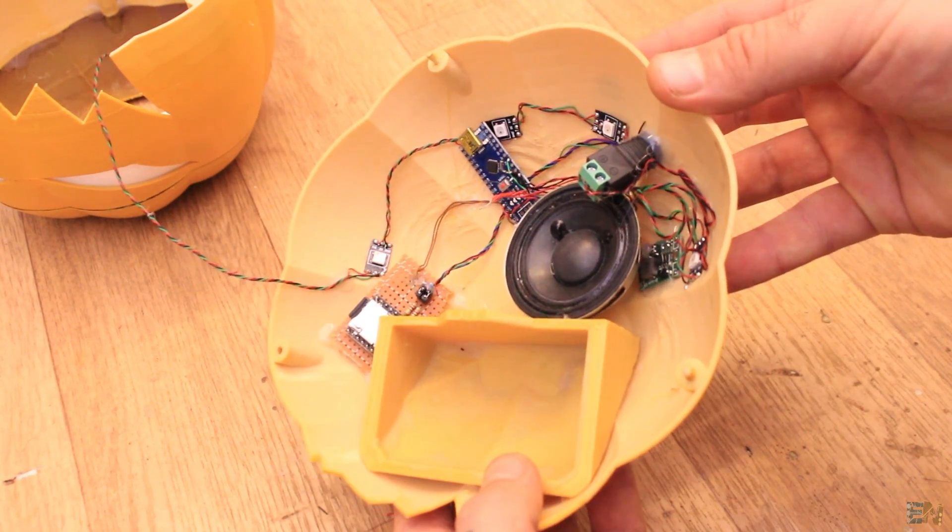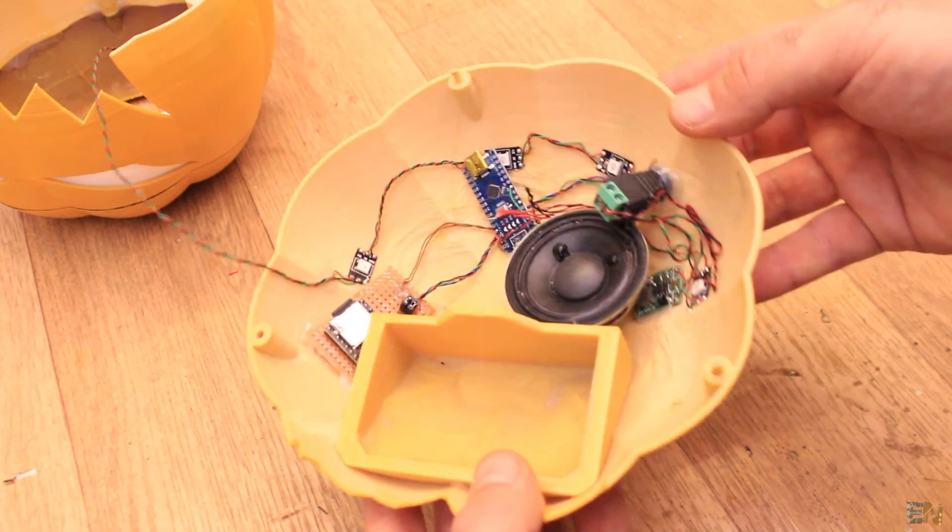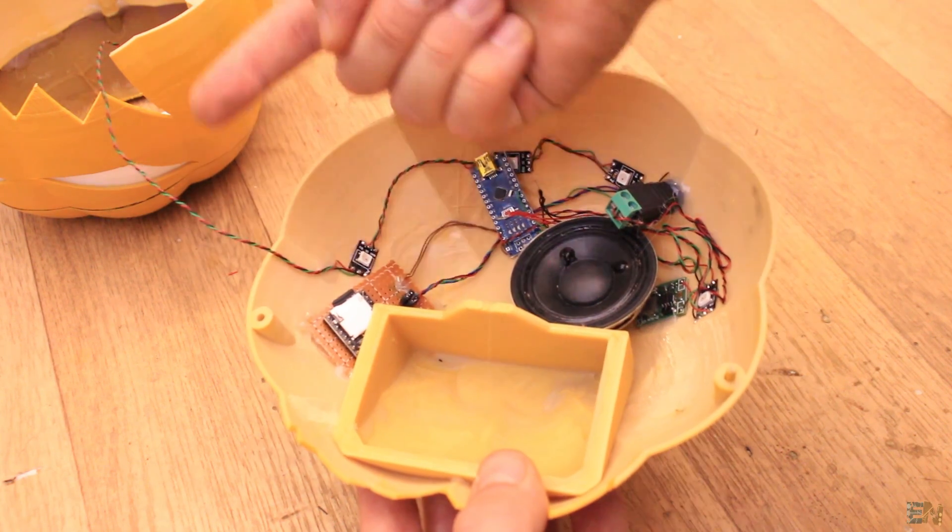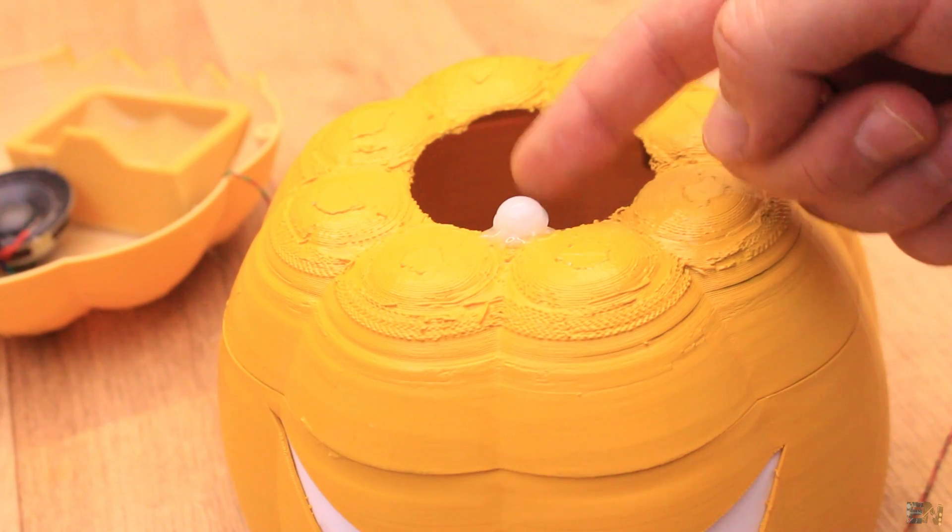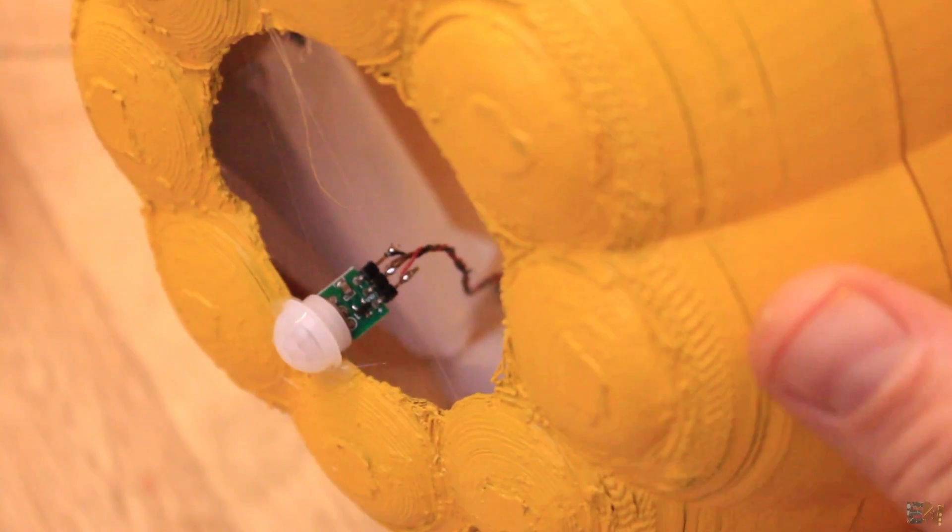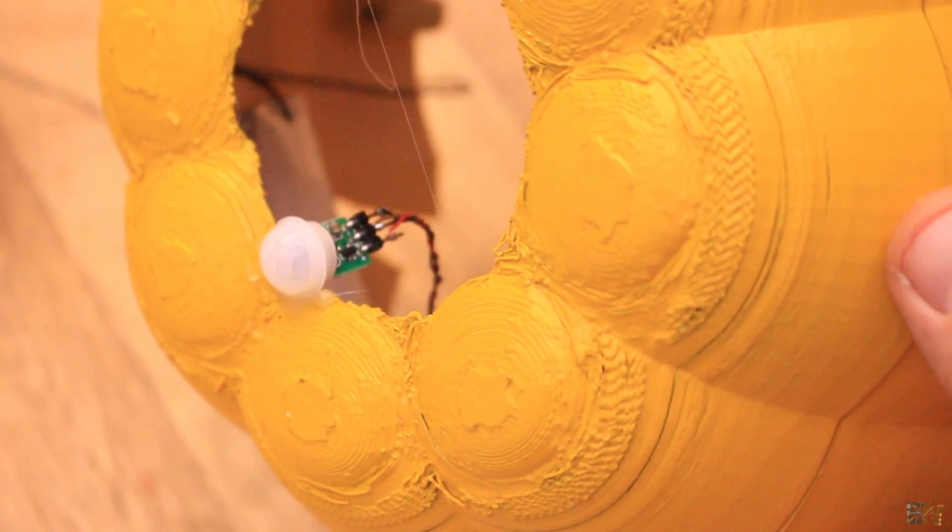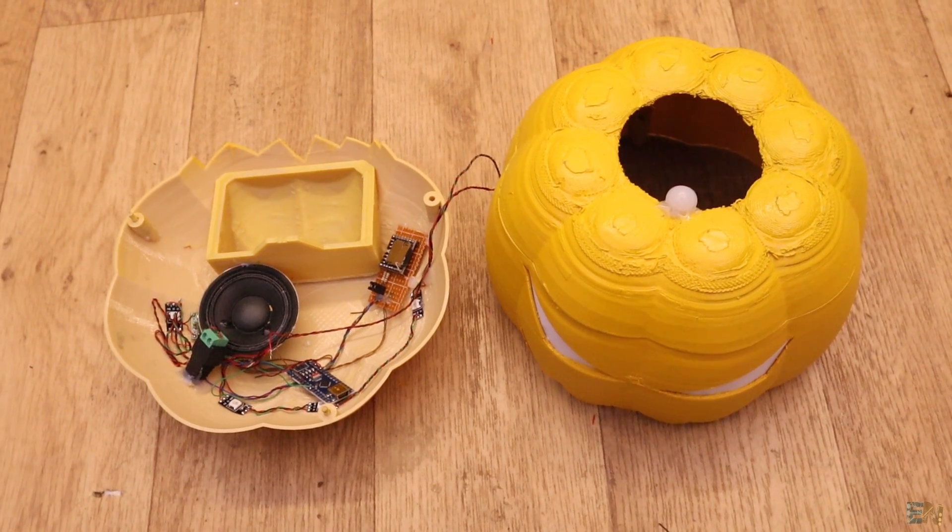Now I glue everything in place on the bottom part of the pumpkin and also make connections to the LEDs from the top part. Then I glue the PIR sensor on the top part of the pumpkin and connect the wires to the Arduino as well. We will later give a better look to the entire pumpkin.